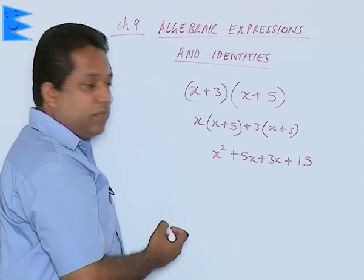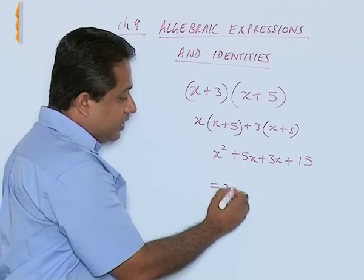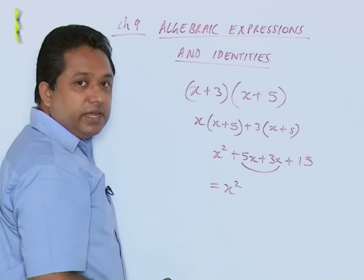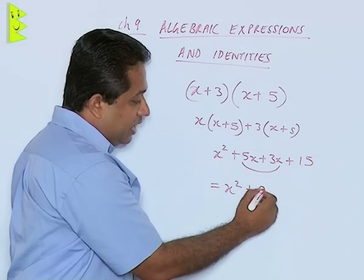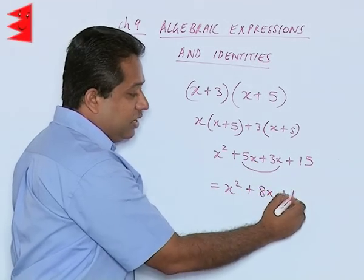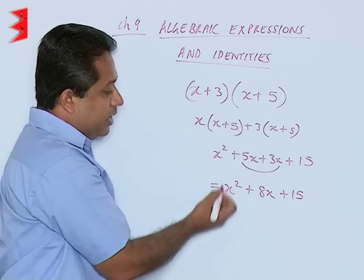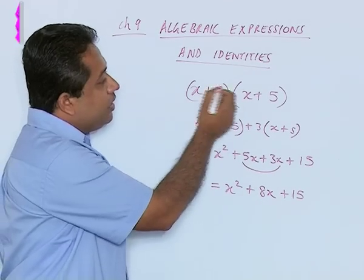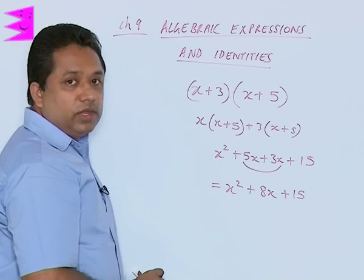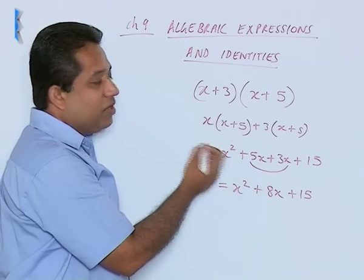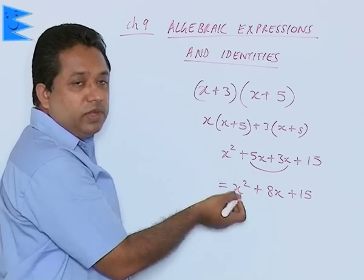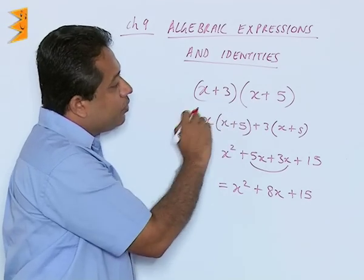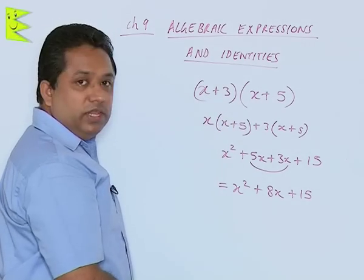So we have got this after opening the brackets. The final answer: we will get x square as it is, but here we find that there are like terms, so that has to be added. 5x plus 3x, we get 8x, plus 15 as it is. So when we have opened the bracket, we have got x square plus 8x plus 15. This is multiplication of a binomial with a binomial. We could also get monomial with binomial, trinomial with trinomial and so on. Different combinations can come, and here we find that all the terms are positive. We can also do it with negative terms.